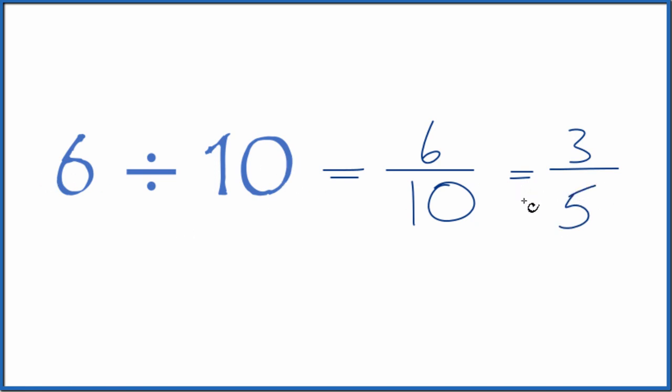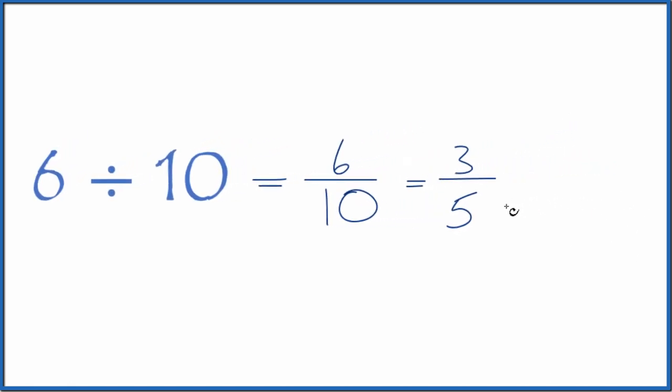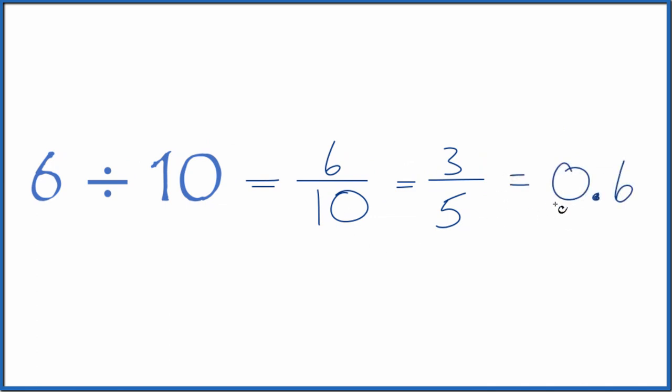So 6 divided by 10 is equal to the fraction 3 over 5. If we want to get a number with a decimal, we can divide 3 by 5 on our calculator. We end up with 0.6. So 6 divided by 10 equals 6 tenths, 3 fifths, or 0.6.